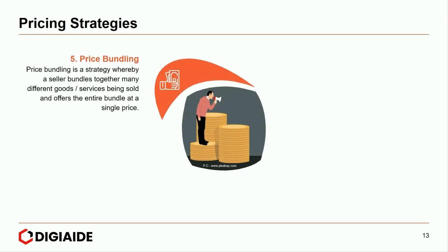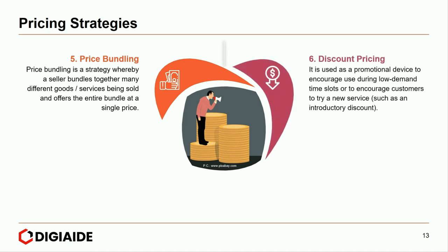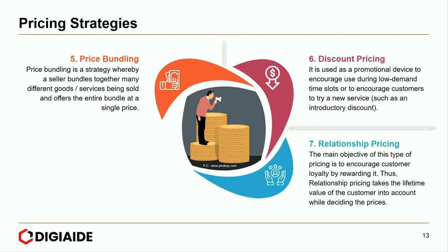Moving on to the fifth pricing strategy, price bundling — a seller bundles together many different goods or services and offers the entire bundle at a single price. The best example is McDonald's Happy Meal. Number six, discount pricing — used as a promotional device to encourage use during low-demand time slots or to encourage customers to try a new service, such as introductory discounts offered by fitness gyms. At number seven is relationship pricing, whose main objective is to encourage customer loyalty by rewarding it, taking the lifetime value of the customer into account. This works wonderfully for Starbucks in their loyalty program.